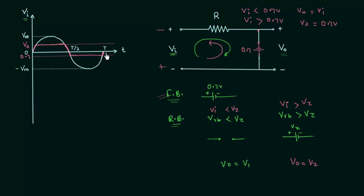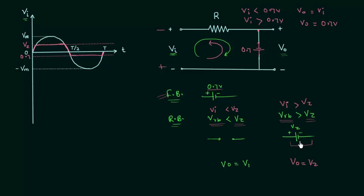This is the complete output waveform. Comparing zener diode clipping circuits with normal diode clipping circuits, everything is the same except the equivalent models. In forward bias, the zener diode is replaced by the barrier potential. In reverse bias, if the reverse bias potential is smaller than Vz the diode is an open circuit, and if it is greater than Vz the zener diode is replaced by the constant voltage source Vz.